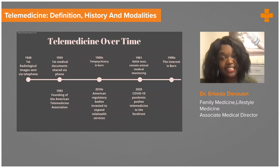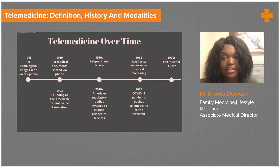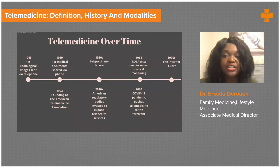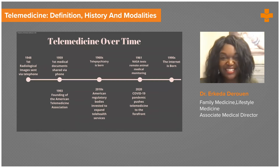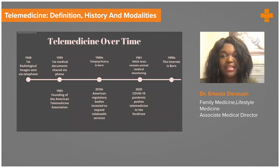In the 1960s, telepsychiatry was born. The Nebraska Psychiatry Institute broadcast live television consultations where psychiatrists would interact with their patients even though they weren't in the same room — essentially like Zoom in the 1960s. In 1961, the US space program sent animals into space and used remote sensors to monitor their conditions as they left Earth's atmosphere, paving the way for remote monitoring as it's commonly used today.